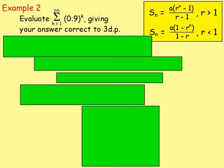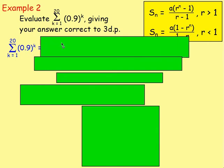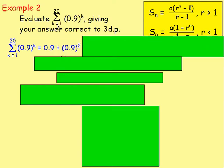Example 2: evaluate the sum of 0.9 to the power of k, going from k equals 1 all the way up to 20, giving your answer correct to 3 decimal places. You are using sigma notation — do not freak out, you just have to think about what that means. You would have 0.9 to the power of 1, then add 0.9 to the power of 2, then 0.9 to the power of 3, and so on.